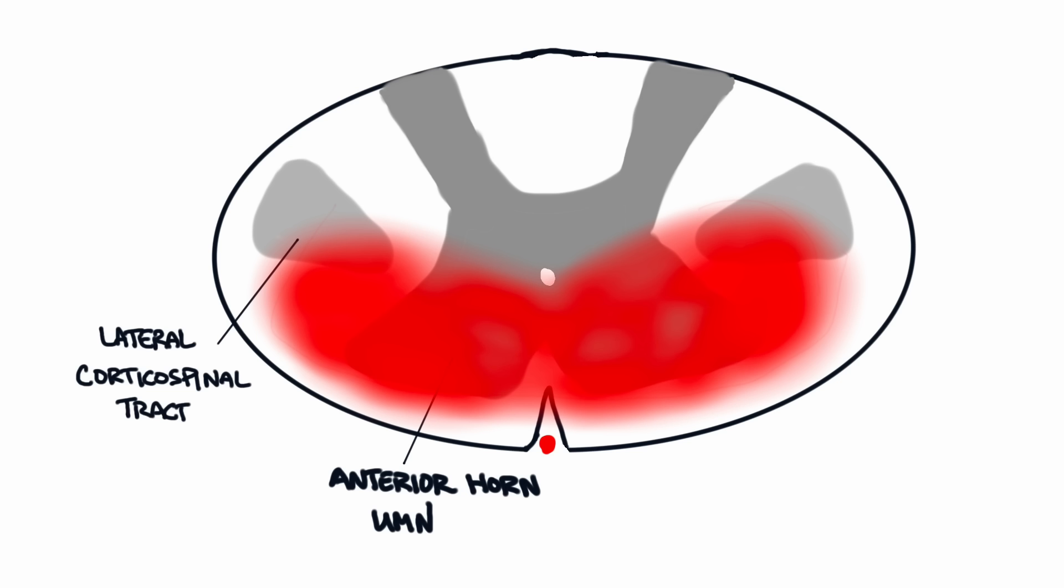If there is an injury, like an anterior cord syndrome, the lower motor neuron in the anterior horn and the axons of the lateral corticospinal tract can be affected at the same time. If this were to happen, there would be flaccid paralysis at the level of the cord injury and upper motor neuron injury distally.